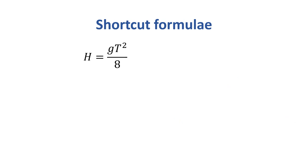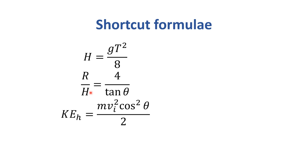Some useful shortcut formulas for projectile motion: height and time relation — h = gt² / 8; range and height relation — R/h = 4/tanθ; kinetic energy at the highest point — KE = mv² cos²θ / 2, since only horizontal velocity remains; and range and time relation — R = gt² tanθ / 2.